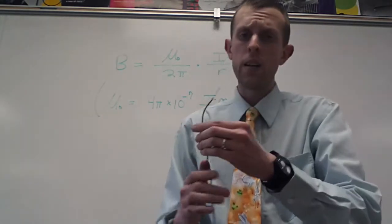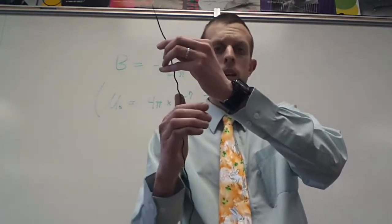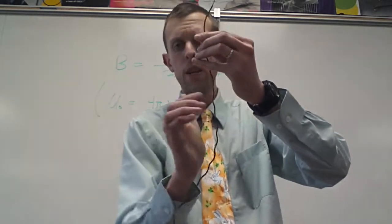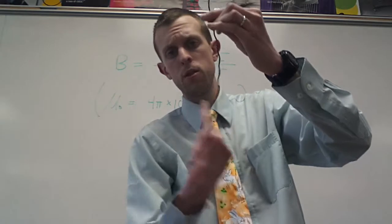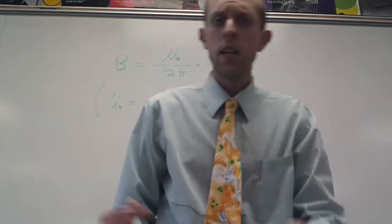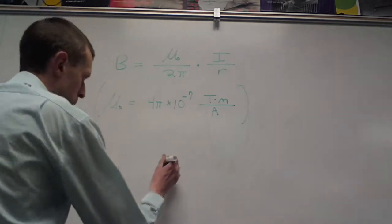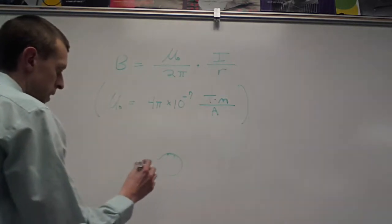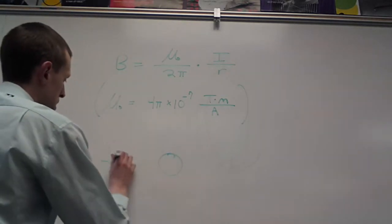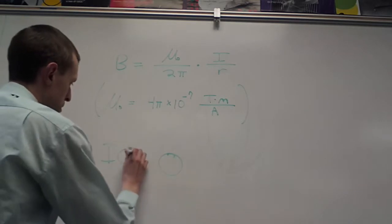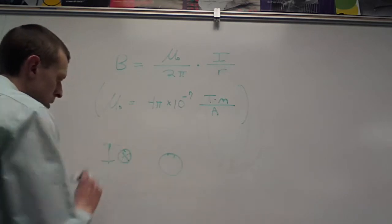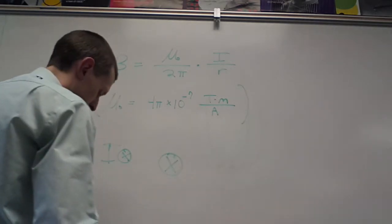And so the second right-hand rule shows that the magnetic field will just kind of form this circle around our wire. If we looked at this from the top down, let's say we have a wire here and current is, let's say current is flowing into the board.